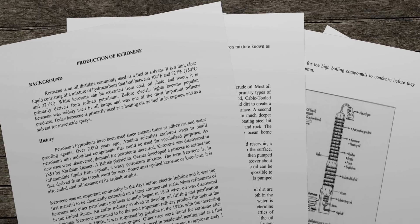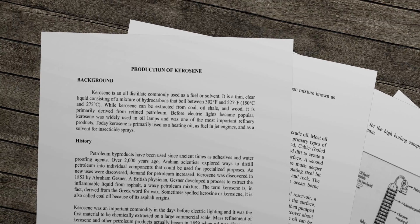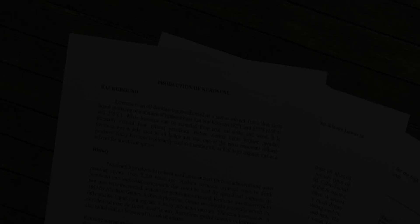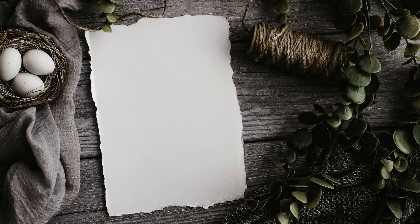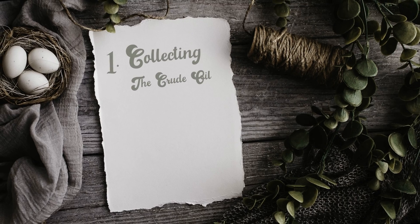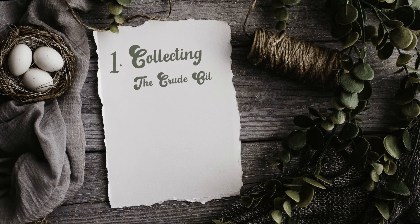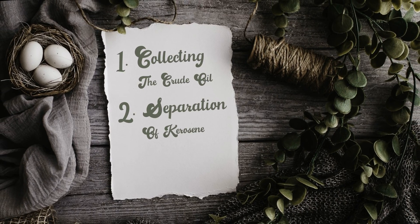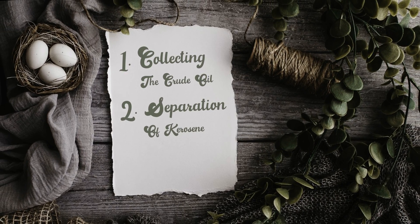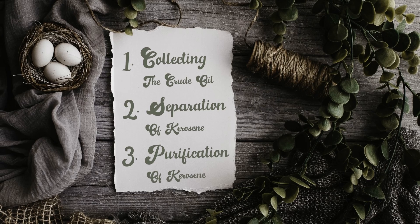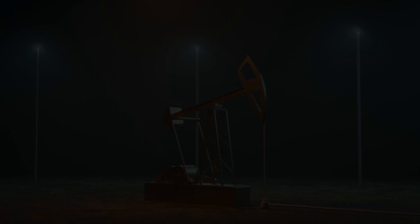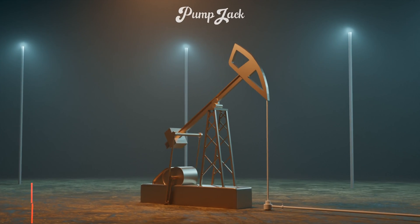There are many steps involved in the manufacturing of kerosene, but in this video we are simply going to see three steps: Step 1 — collecting the crude oil; Step 2 — separation of kerosene; Step 3 — purification of kerosene.